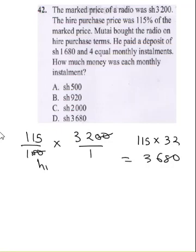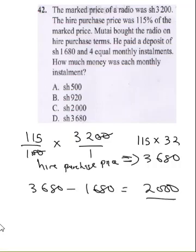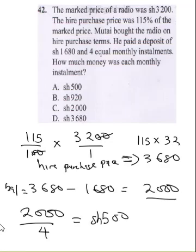Now if he paid a deposit of 1,680, we do 3,680 minus 1,680, which gives us 2,000 shillings. That is the remaining balance. He paid it in four installments, so we do 2,000 divided by 4, which gives us 500 shillings. That is the monthly installment and our final answer.